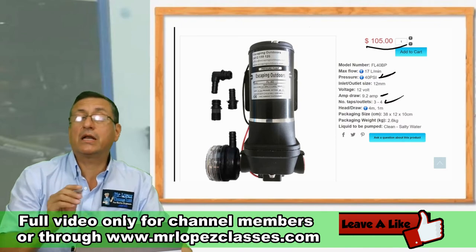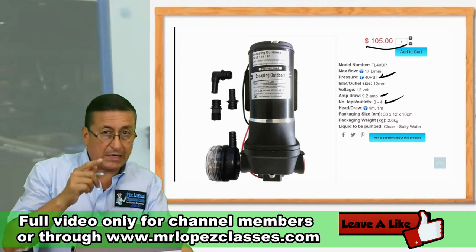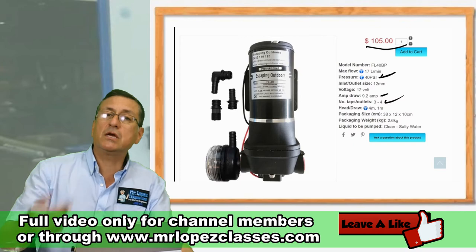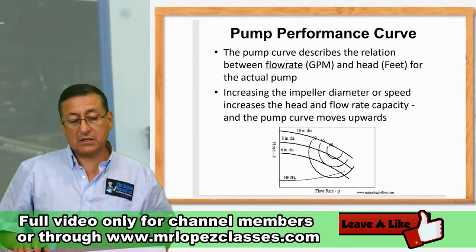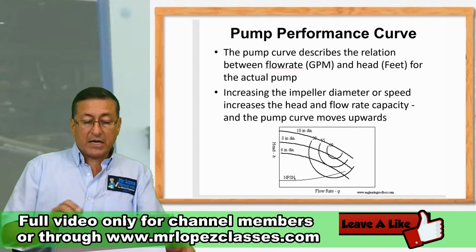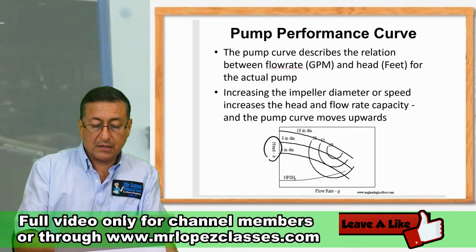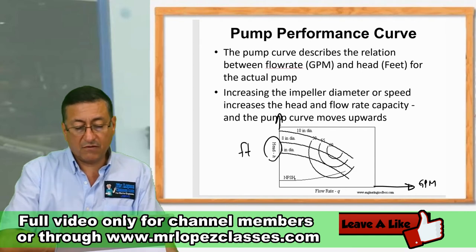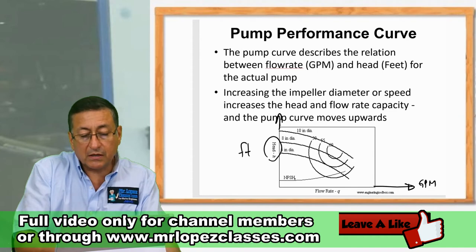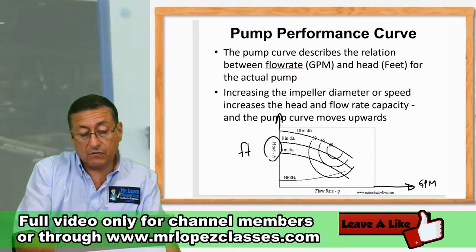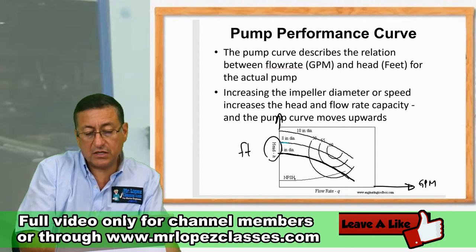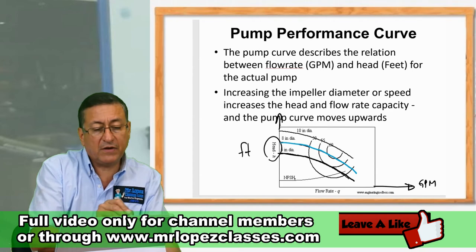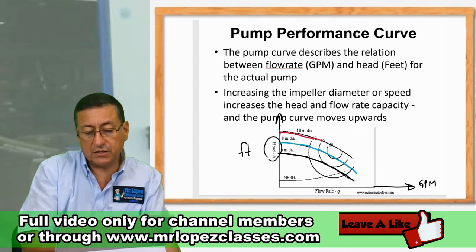Now I'm going to explain how to increase the head or increase the flow, using the pump performance curve. On the vertical axis we have the head in feet, and on the horizontal axis we have the flow in gallons per minute or gallons per hour. I'll show curves for pump outlet diameters of 5 inches, 8 inches, and 10 inches.